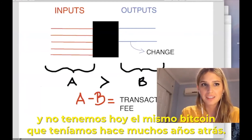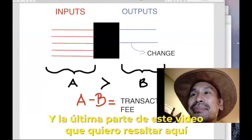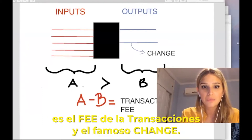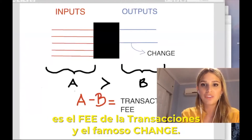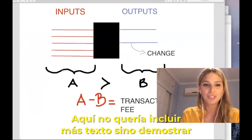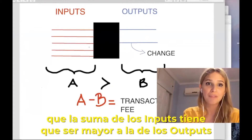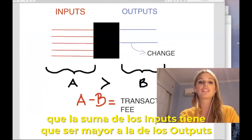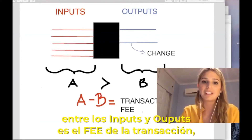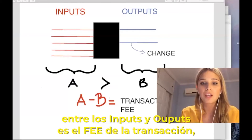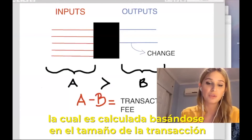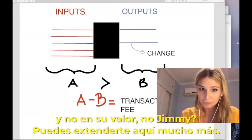The last part of this topic is transaction fees and change. Very basically, the sum of inputs must be greater than the sum of outputs to make a transaction. The transaction fee is the difference between inputs and outputs, and it is calculated based on the size of the transaction in bytes, not the value of the transaction.